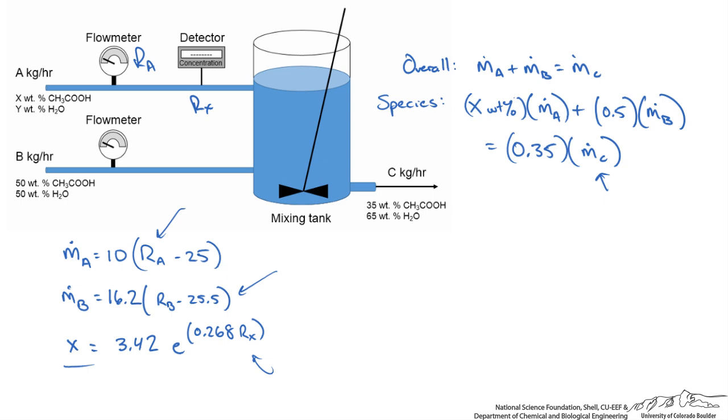We take our species balance. I am going to take x over 100 because we need it as a fraction to use with our flow rate. I have used our overall and species balance to get rid of MC. We are left with x, MA, and MB. At this point we can plug in those equations on the left.